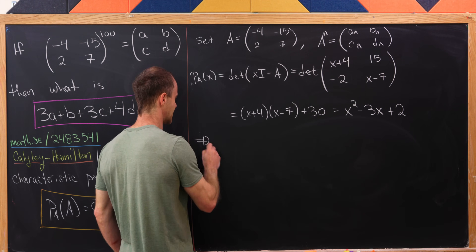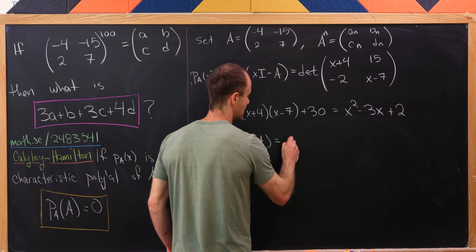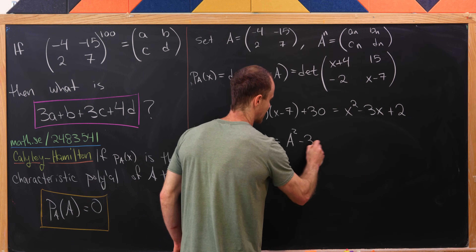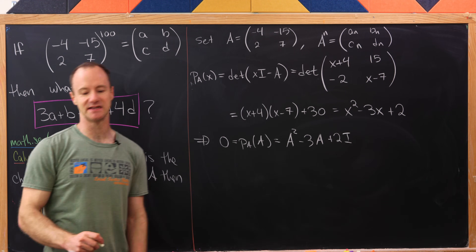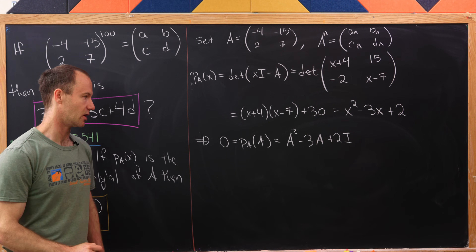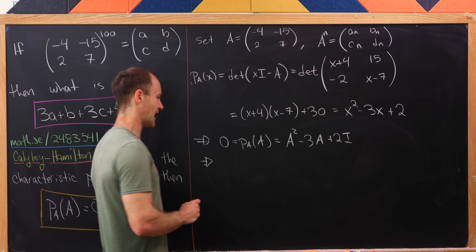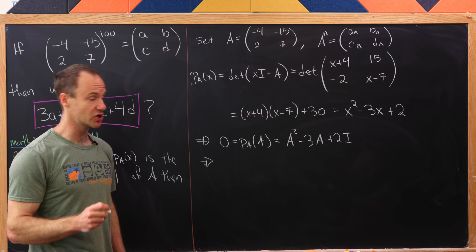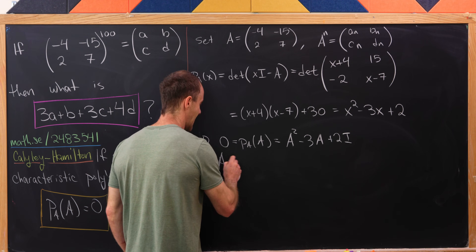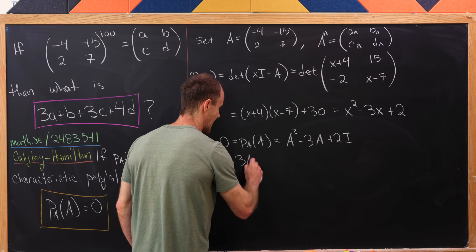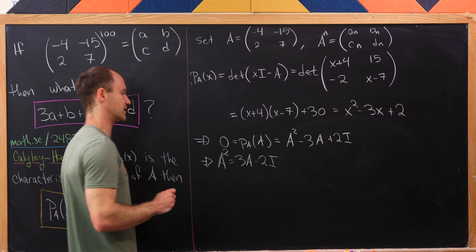By Cayley-Hamilton, 0 equals P(A) evaluated at A, which is A squared minus 3A plus 2I. This gives us a nice recursion: A squared equals 3A minus 2I.